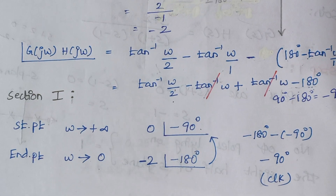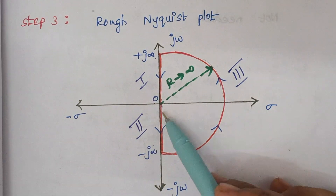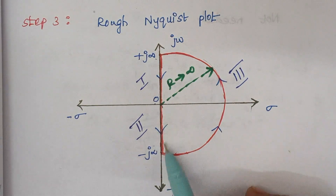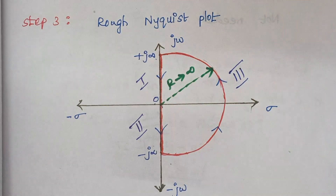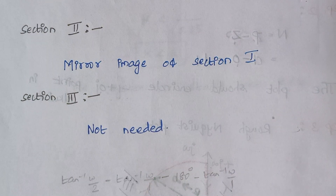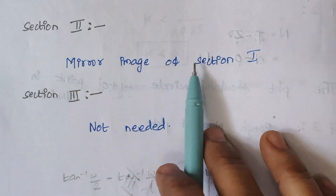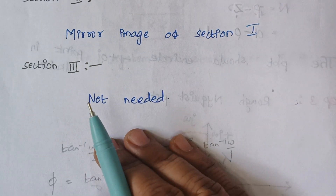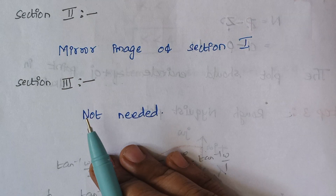Looking at Section 2, it is nothing but the mirror image of Section 1, so no need to solve it separately — we can write it as the mirror image. Finally, in Section 3 the analysis is not needed.